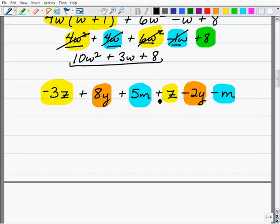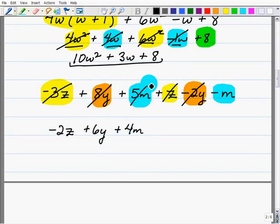Now in this case, they're all at the same power, the power of 1. So it doesn't make a difference what order you write them in. So I'm just going to go from left to right. Negative 3z plus 1z. Remember there's a 1 there. It's going to be negative 2z. And I cross cancel them just so I can kind of keep track of what's going on. 8y plus a negative 2y. It's going to be plus 6y. Cross cancel those. Now I have 5m plus a negative 1m. That'd be plus 4m.